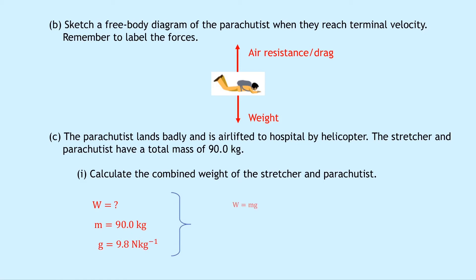So writing down our equation, we have W equals mge. Putting in the numbers, we have 90.0 times 9.8. And if you put that into your calculator, we should get an answer of 882 newtons.